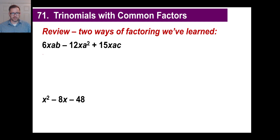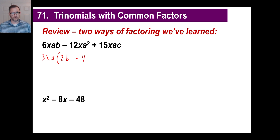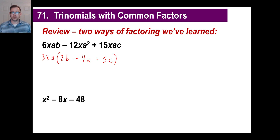I'm hoping you pulled out a 3 from this, then recognized that they all had x's, then recognized that they all had a's, and then pulled that out. So 3xa — if you divide this by that, you get a 2, you get a b, then you have negative 12 divided by 3 is negative 4, x divided by x is 1, a² divided by a is just a, 15 divided by 3 is 5, then xac divided by xa gives you just c left. That's all you can do. We factor out the greatest common factor — we know how to do that.